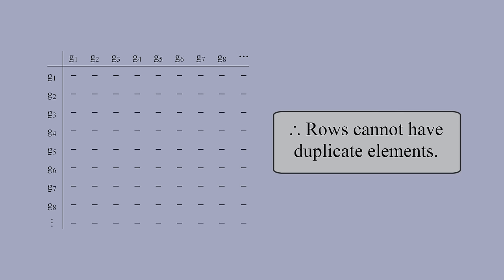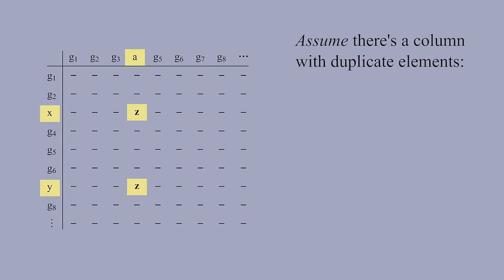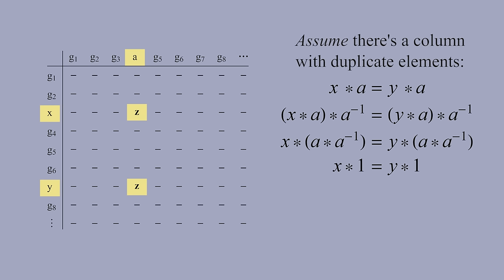We can use the same reasoning to show that there cannot be a column with duplicate elements either. If there were, then we'd get X times A equals Y times A. Multiplying on the right by A inverse gives us X equals Y. Another contradiction.